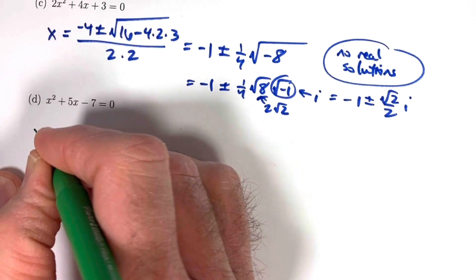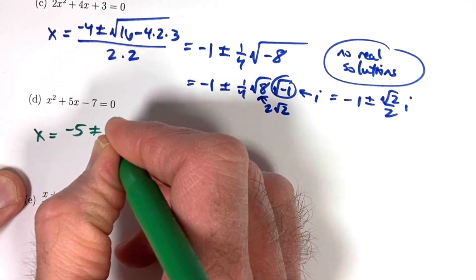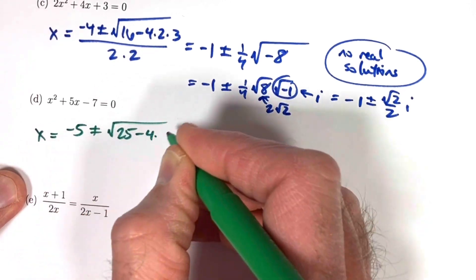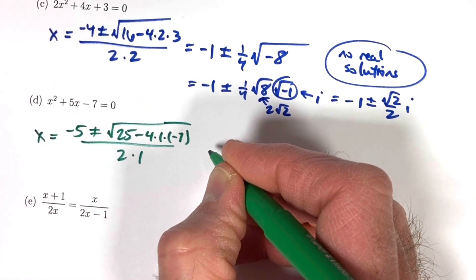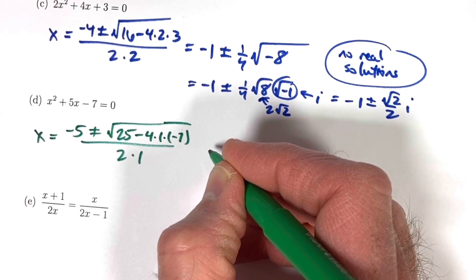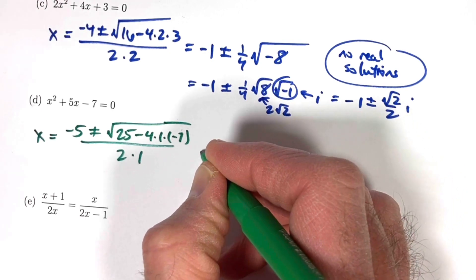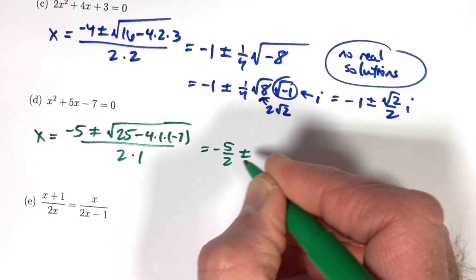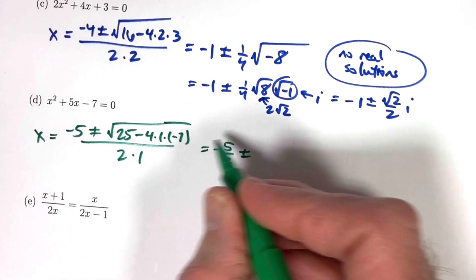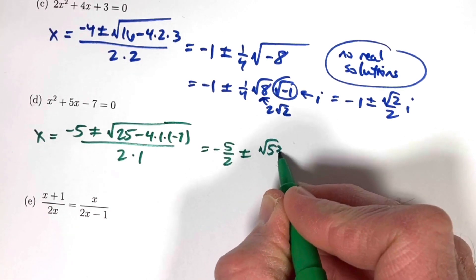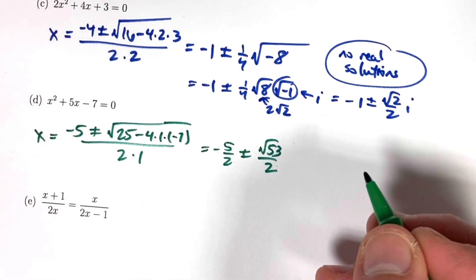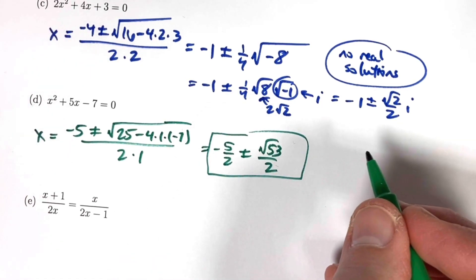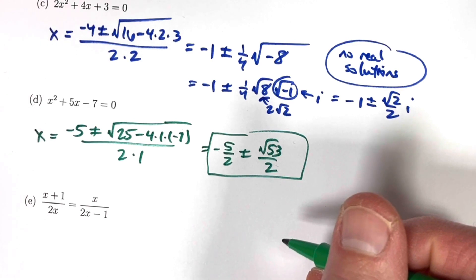Part D also cannot be factored. Applying the quadratic formula gives negative 5 halves plus or minus the square root of 53 over 2. These are irrational real solutions — not perfect squares, but valid real numbers. Their decimal approximations could be useful in practical problems.